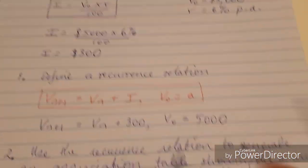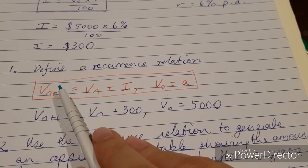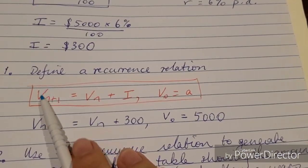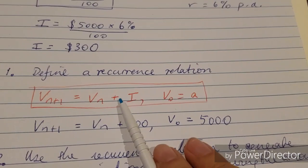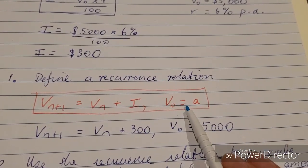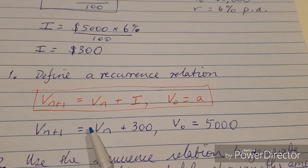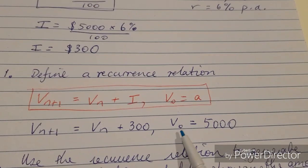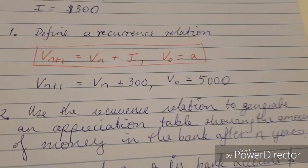Next part. We need to define the recurrence relation. The recurrence relation tells us that the next term, given by V_{n+1}, also known as the future value in financial maths, is equal to the previous term V_n plus the interest. We need to tell the starting term: V_0 equals the starting term. So V_{n+1} is given by the previous term V_n plus the interest of $300, V_0 equals $5,000, which is our principal. That's the starting term.